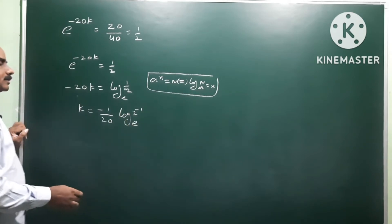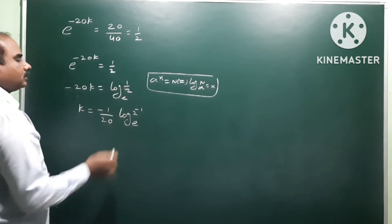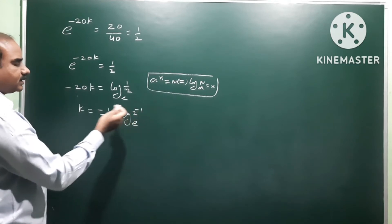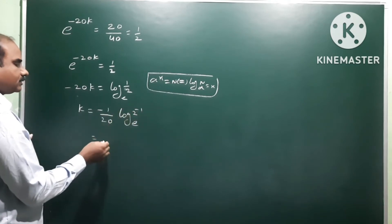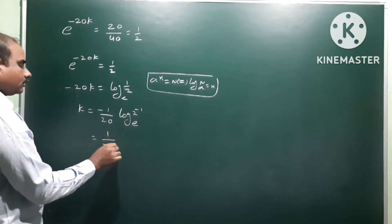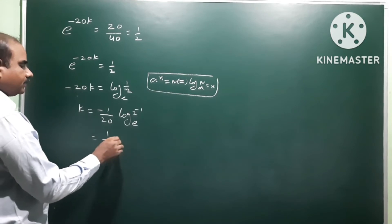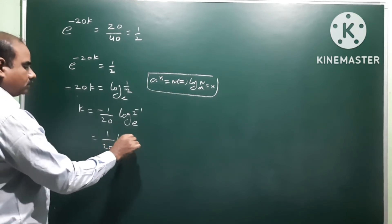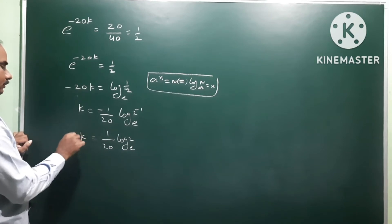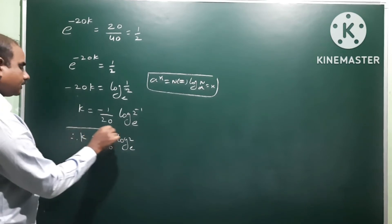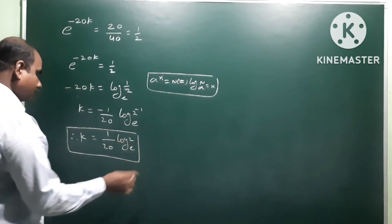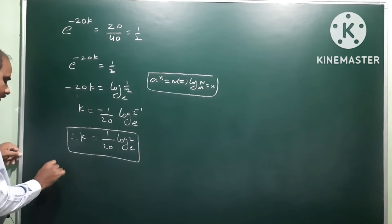So 1 by 2 equals 2 power minus 1, and minus 1 divided by minus 20 gives k equals 1 by 20 times log 2 base e. This is the value of k.